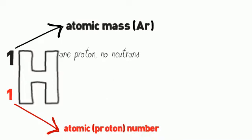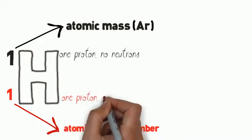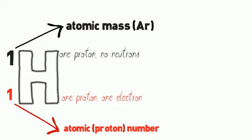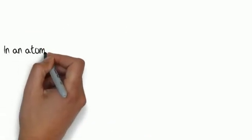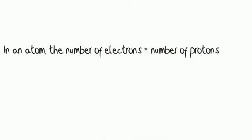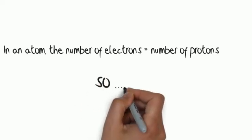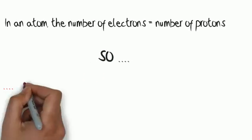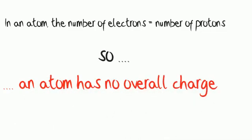So let's have a look at hydrogen. Hydrogen has one proton, no neutrons and one electron. In an atom, the number of electrons is equal to the number of protons. So just look at the bottom number if you want to know how many electrons are in an atom. An atom has no overall charge.